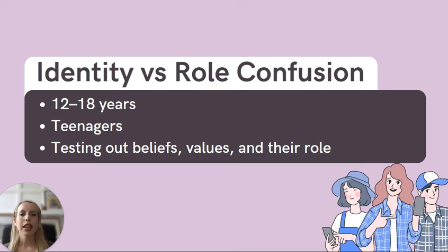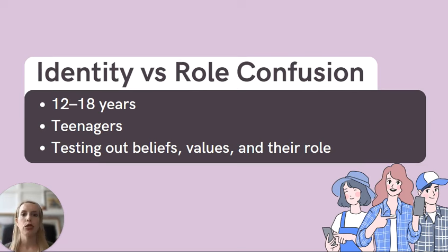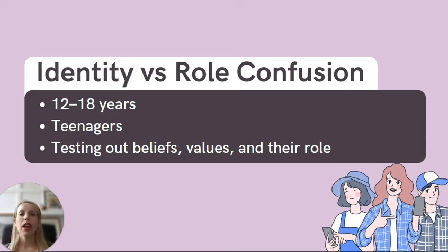Next is identity versus role confusion. This occurs around the ages of 12 to 18 years old. This is such an important stage — teenagers are figuring out who they are, their beliefs, their values, and what their life goals really are.